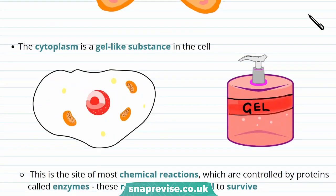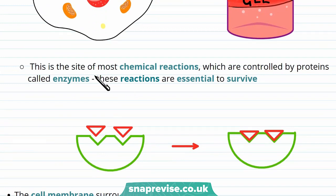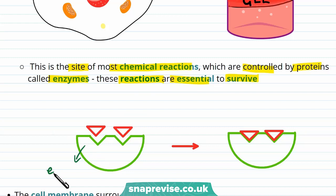The cytoplasm is a gel-like substance in the cell, and it's actually quite an important part of the cell. This is because the cytoplasm is the site of most chemical reactions, which are controlled by proteins called enzymes. These reactions are essential to survive. Enzymes make reactions a lot quicker in the body and increase the speed of a reaction.